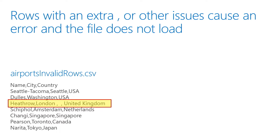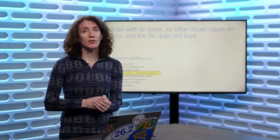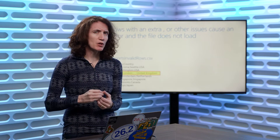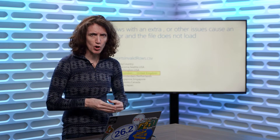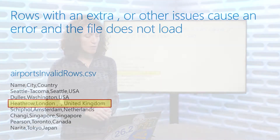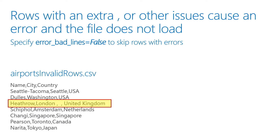Now, if you have any problems inside your CSV file — because sometimes you don't have control over where these files come from — one of the things you have to worry about is how you're going to handle those types of errors in your Python code. So in this case, if you take a look at the CSV file, there's an extra comma in the row for London. We have the airport called Heathrow, city is London, and then there are two extra commas. So it actually sees four values instead of three for that row, and by default that's going to crash and it won't load any data at all into our data frame.